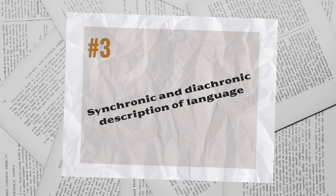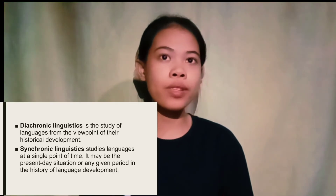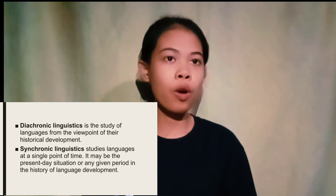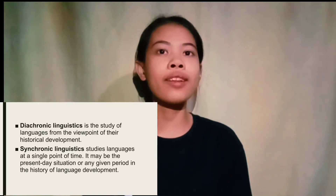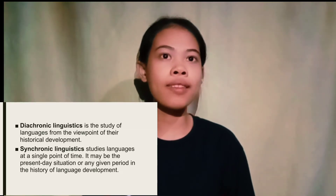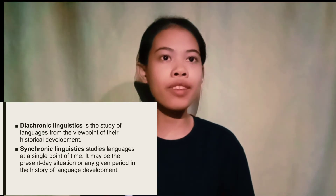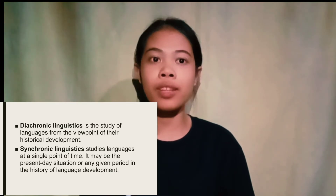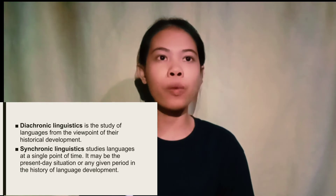The third principle is synchronic and diachronic description of language. These two basic approaches can be applied to the study of language. Diachronic linguistics is the study of language from the viewpoint of its historical development, while synchronic linguistics studies language at a single point in time — it may be the present-day situation or any given period in the history of language development. Both ways of describing language are important.